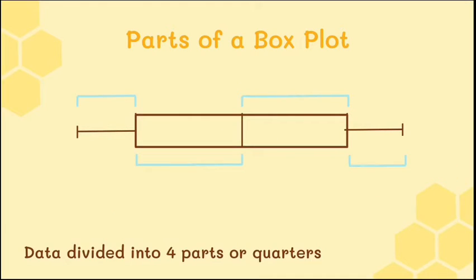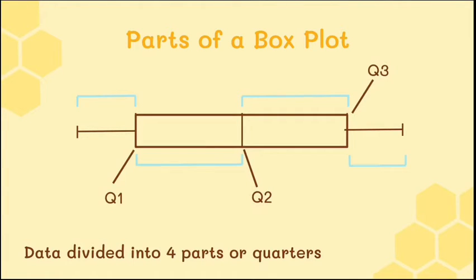In a box plot, the data is divided into four parts: minimum to lower median, lower median to median, median to upper median, and upper median to maximum. This is what quartiles mean. The lower median is quartile 1 (Q1), the median is quartile 2 (Q2), and the upper median is quartile 3 (Q3). These three points divide the data set into four quarters.